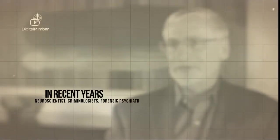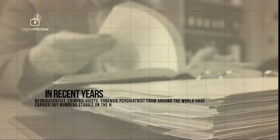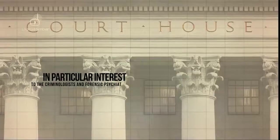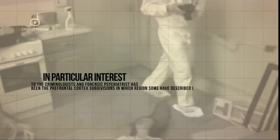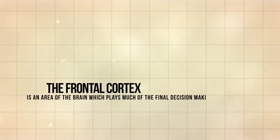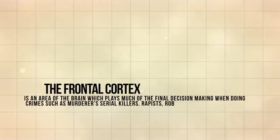In recent years neuroscientists, criminologists, and forensic psychiatrists from around the world have carried out a number of studies on the human brain. Of particular interest to criminologists and forensic psychiatrists has been the prefrontal cortex subdivisions in which regions some have described where wicked behavior takes place. The frontal cortex is an area of the brain which plays much of the final decision-making when doing crimes such as murders, serial killers, rapists, robbers, etc.